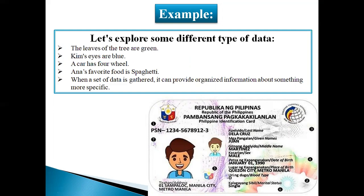We can say the leaves of the trees are green — we are recording data about the color of the leaves. We can also see other trees that have yellow leaves or orange leaves, recording what types of trees are available in an area. We can create data about someone's personality — for example, Kim's eyes are blue. A car has four wheels, some cars have three wheels. Anna's favorite food is spaghetti.